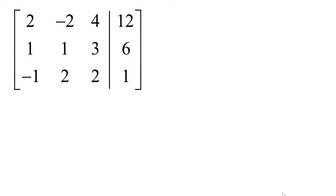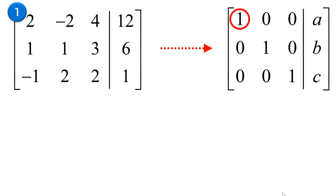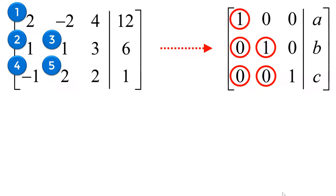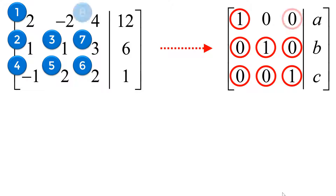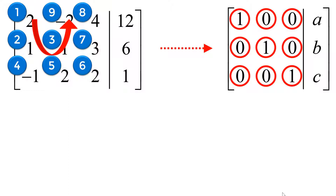My suggested sequence is the following: First, reduce the first row, first column element to 1. Second, reduce the second row, first column element to 0. Third, reduce the second row, second column element to 1. Fourth and fifth, reduce the third row's first two column elements to 0s. Sixth, reduce the third row, third column element to 1. Seventh, eighth, and ninth, reduce the remaining elements to 0s. The suggested sequence goes in a counterclockwise direction from 1 to 9.